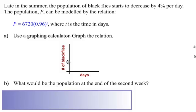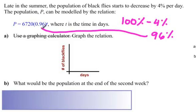Okay? Let's do the next question. Late in the summer, the population of black flies starts to decrease by 4% every day. So, remember, when something's decreasing, that's decay, you start with 100%. But it's decreasing by 4% every day. Well, that leaves us with 96%. And that's how they came up with the decay decimal, which is right there, of 0.96. They just changed this 96% into a decimal. And over here, we have t. It's an exponent t. T is the time in days. 6720 is how many black flies we're starting with.